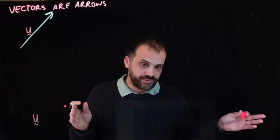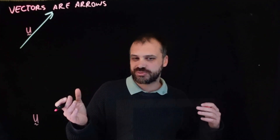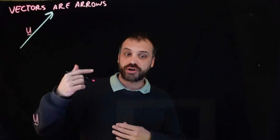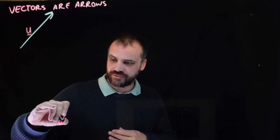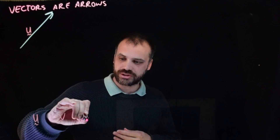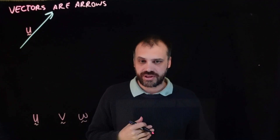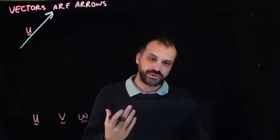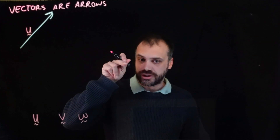You can use any letter of the alphabet, but by convention we start at U. If we've got another vector, we might call it vector V. If we've got another vector, we might call it W. If we have heaps and heaps of vectors, then we have to use all the letters of the alphabet, but that's where we start — generally, squiggly line.